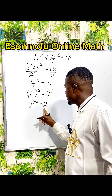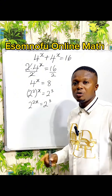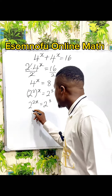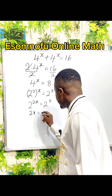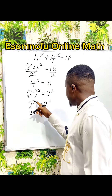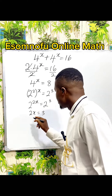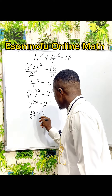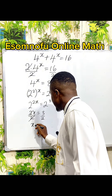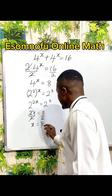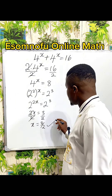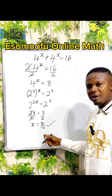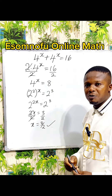Now the bases are the same, therefore the powers should also be the same. So you can write that 2x is equal to 3 — I am just equating the powers. To get x, divide both sides by 2. We cancel out and x is just 3 over 2. This is the solution to this problem — you can call it 1.5 or one and a half.